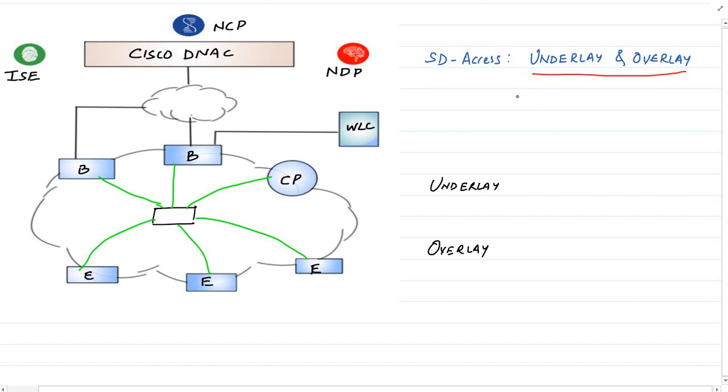The plan is to build a strong base on various SD-Access components like underlay and overlay, VXLAN, LISP, etc. Eventually we will combine all these concepts to get an overall understanding of SD-Access network fabric.